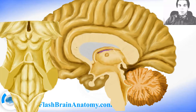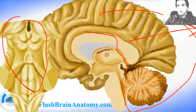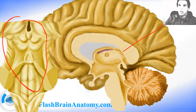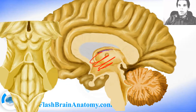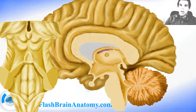Here we have both illustrations next to each other. This illustration is what we would see if we make a cut, remove this part of the brain, and look at the brain stem from this perspective. This space is the third ventricle, and this part was the pineal gland. So the pineal gland is one part of the epithalamus. Another part of the epithalamus is the posterior commissure.